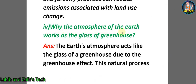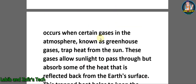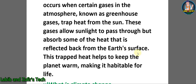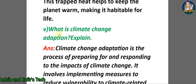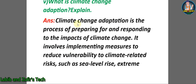The atmosphere of the Earth works like the glass of a greenhouse. The Earth's atmosphere acts like the glass of a greenhouse due to the greenhouse effect. This natural process occurs when certain gases in the atmosphere — known as greenhouse gases — trap heat from the sun. These gases allow sunlight to pass through but absorb some of the heat that is reflected back from the Earth's surface. This trapped heat helps to keep the planet warm, making it habitable for life.